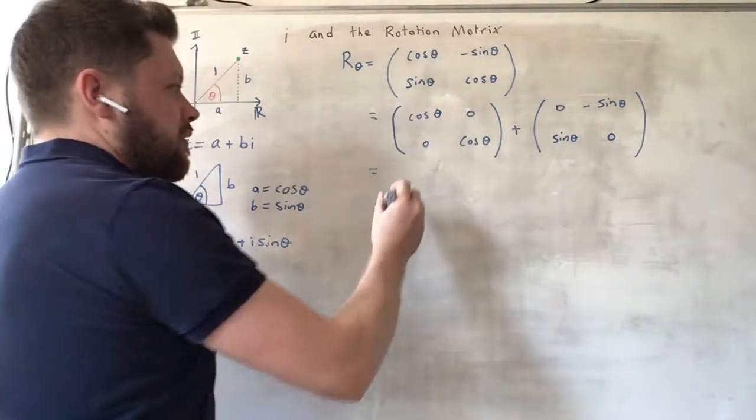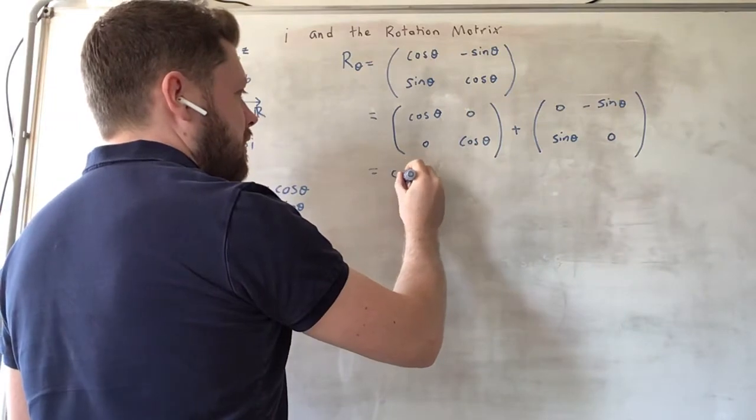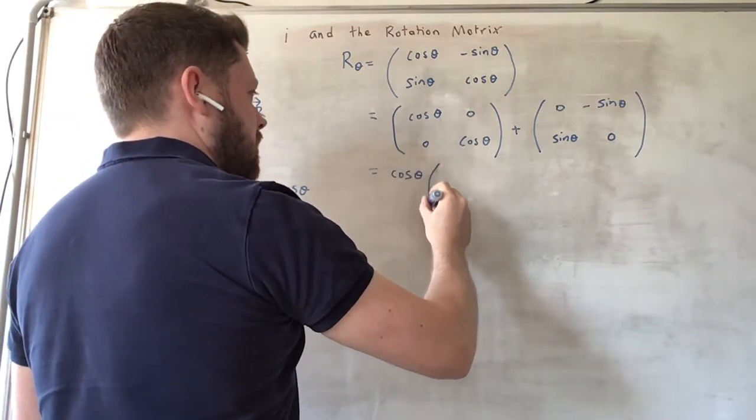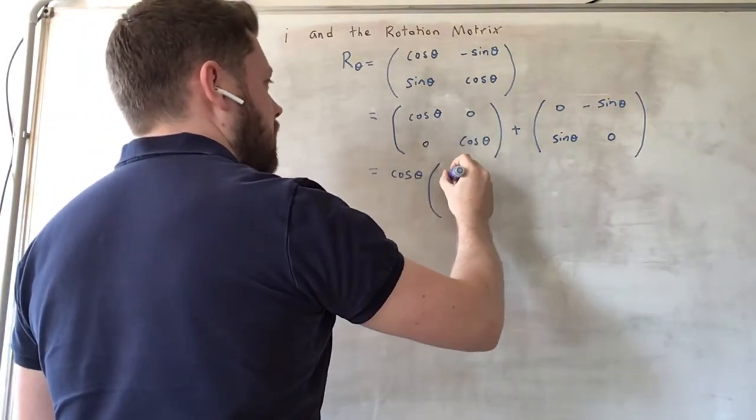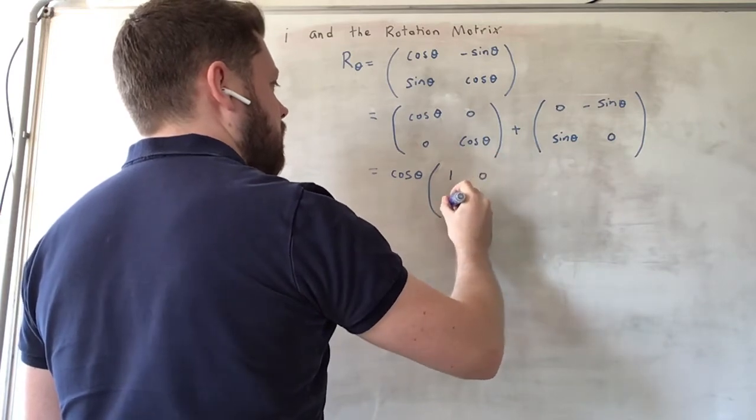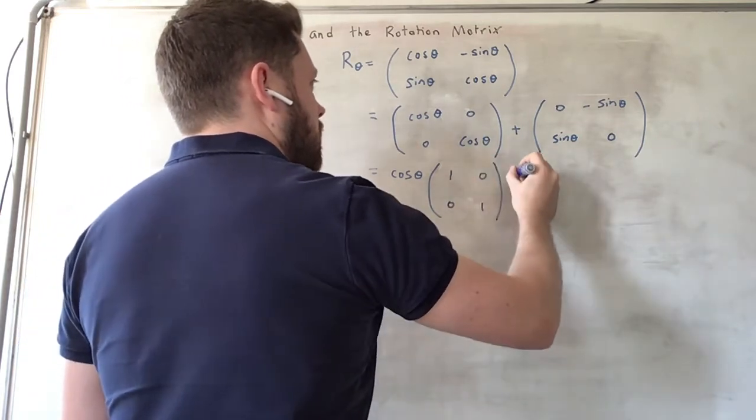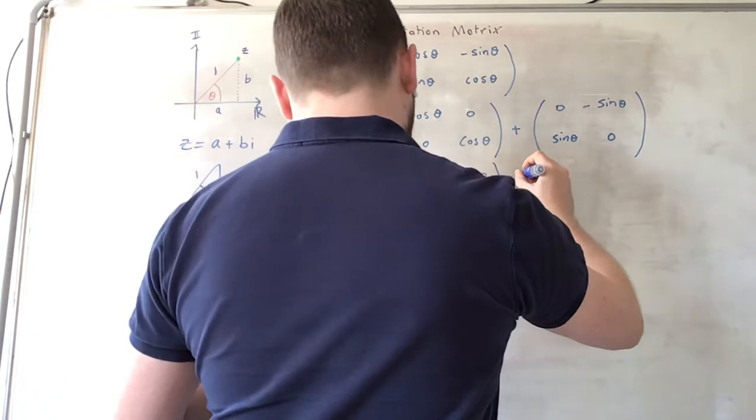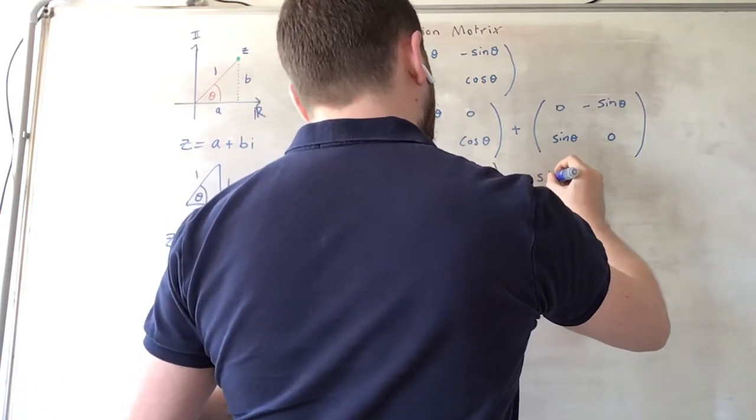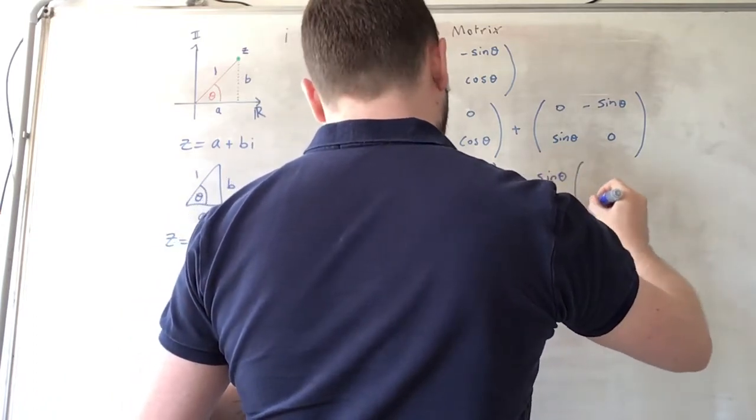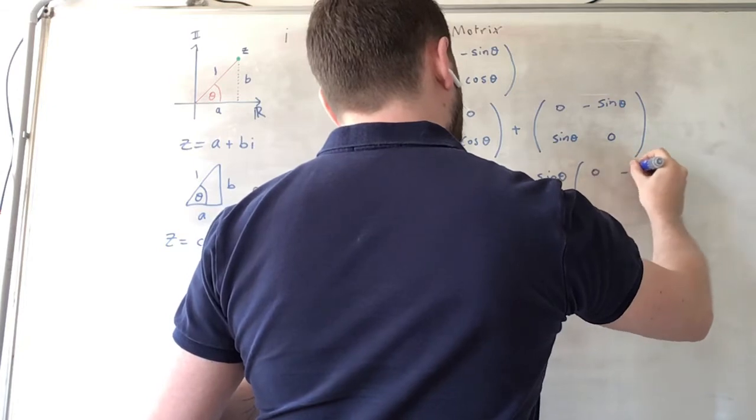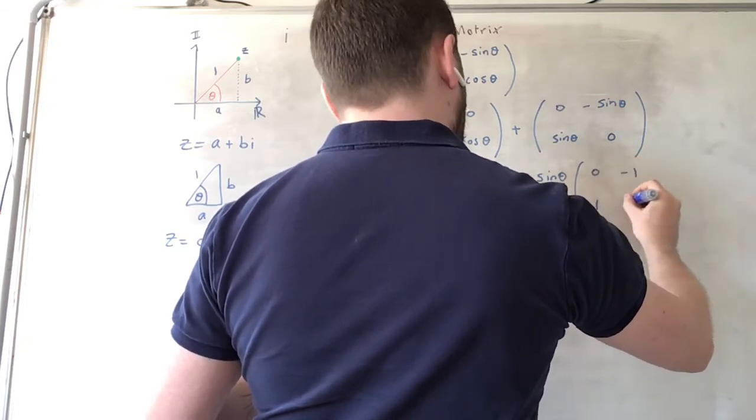But if we do this, that will allow us to take cosine theta out of this one. So we get (1, 0, 0, 1), plus we take out sine theta, we get (0, -1, 1, 0).